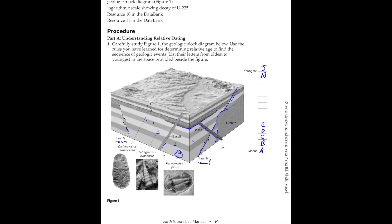Now we've got some stuff to sort out. Fault M cuts all the way through layer E, so M has got to be the next youngest. And what I thought was a sill with the basalt must have just spilled out onto the surface — there had to have been an erosion event because we're missing some material. So the next thing that occurred was this basalt dike, L. This is a complex one.